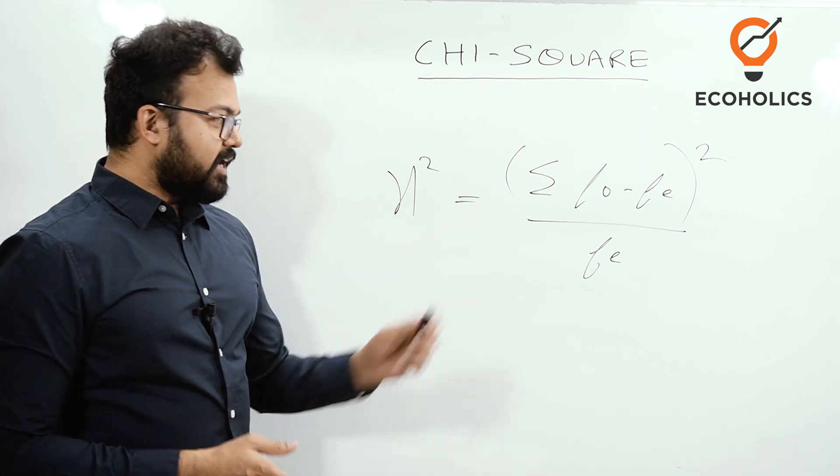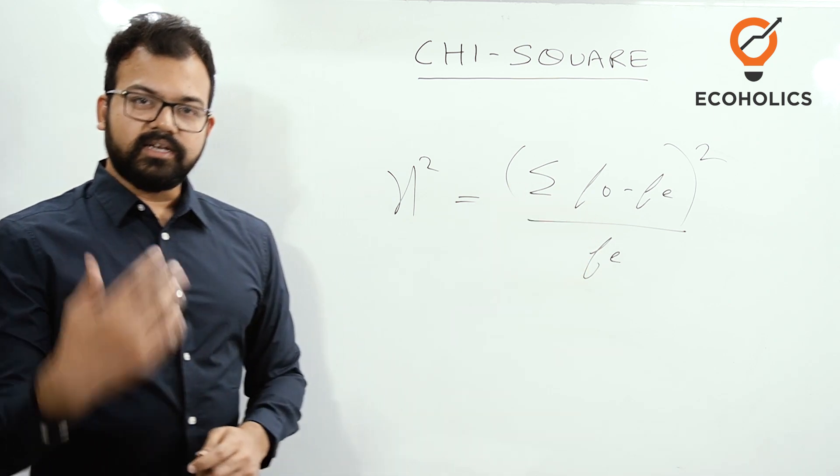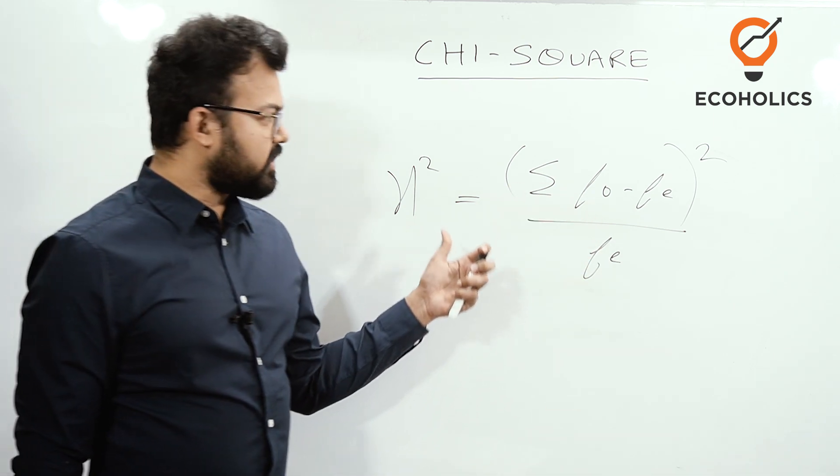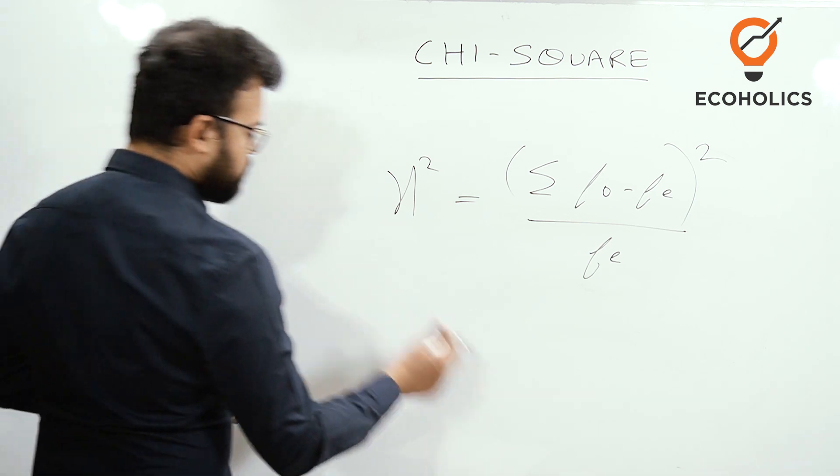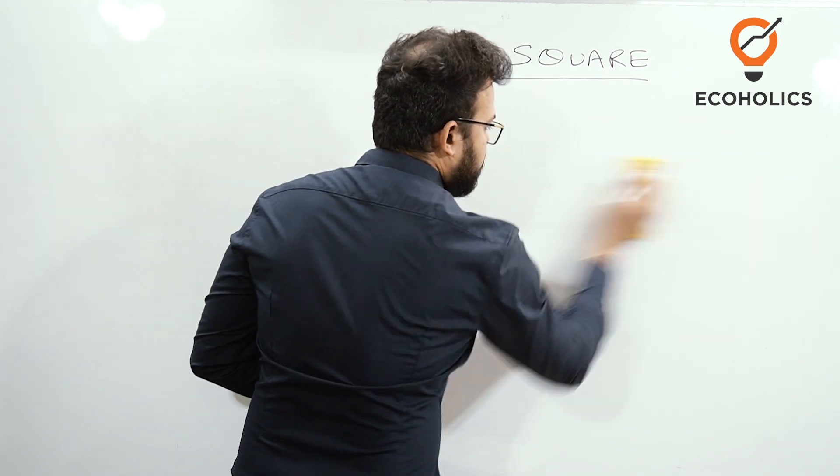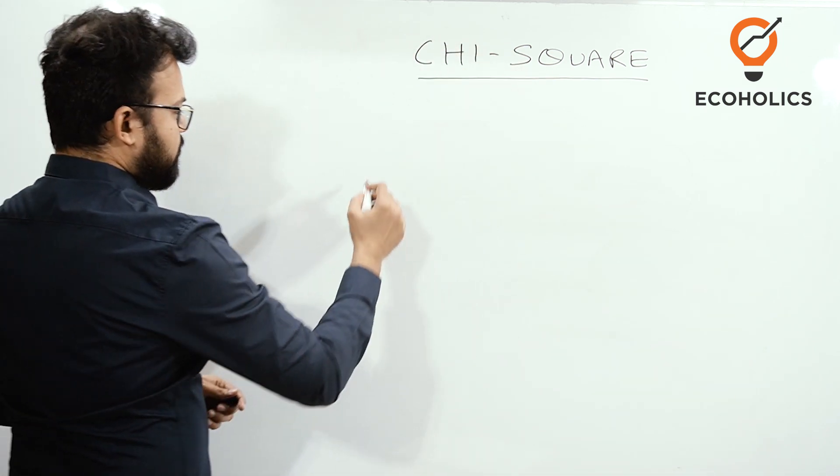After getting a value of chi-square, we will see the numerical questions in the next video. But here, suppose chi-square, whatever value comes, we have to compare with the table value.